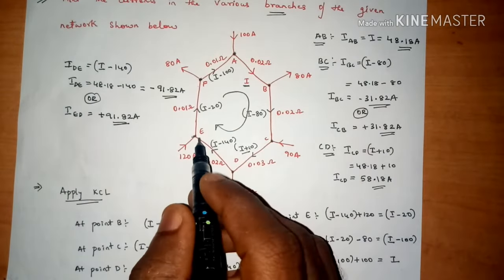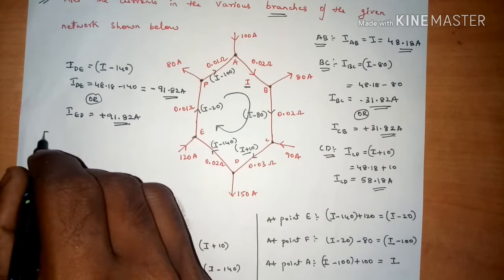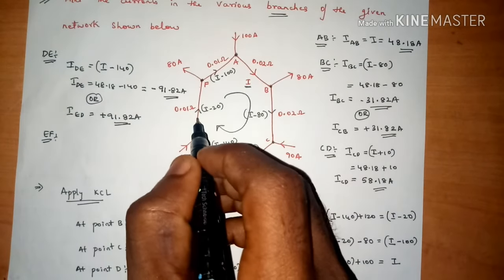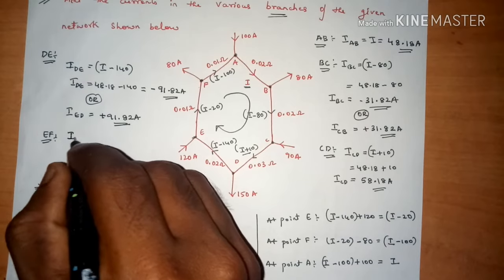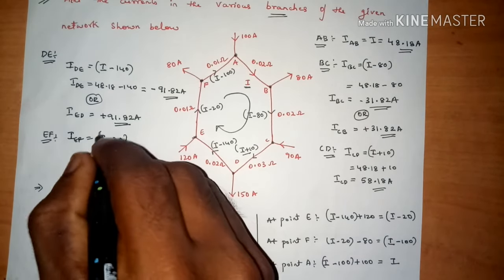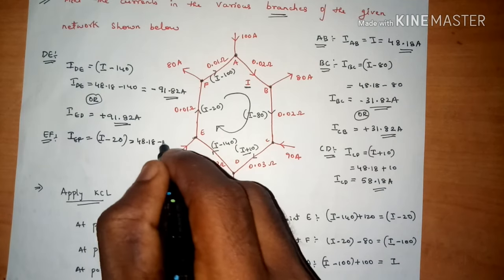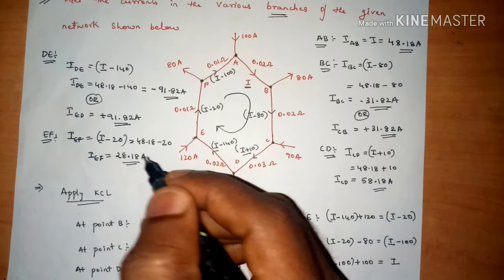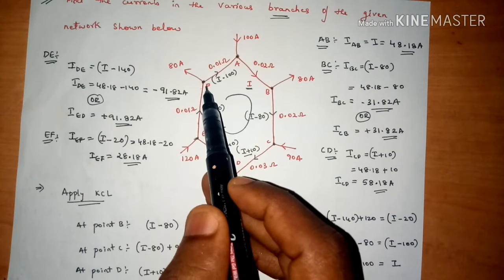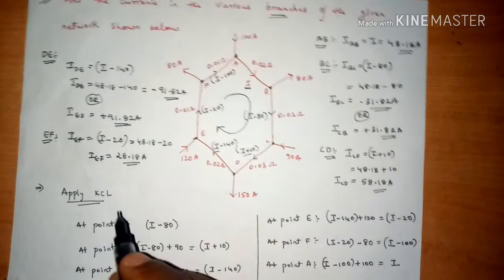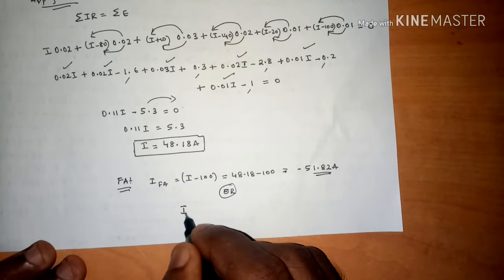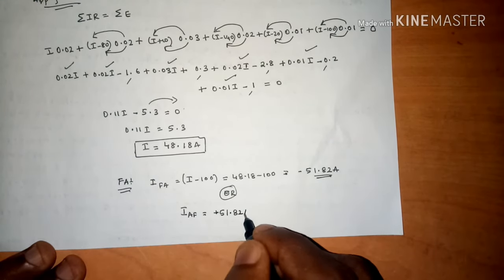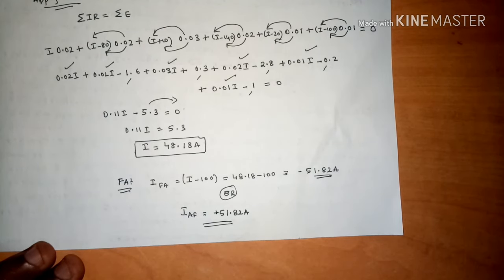For branch E to F, the current is I minus 20, giving 48.18 minus 20 equals 28.18 amps. For the last branch, F to A, the current is I minus 100, giving 48.18 minus 100 equals minus 51.82 amps. Interchanging to A to F gives a positive value of 51.82 amps. These are the answers for all six branch currents.